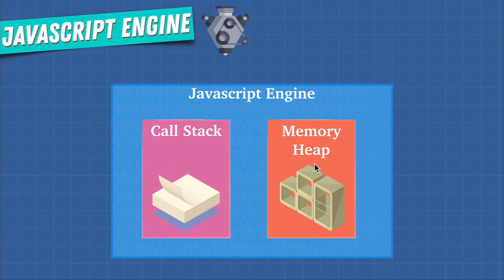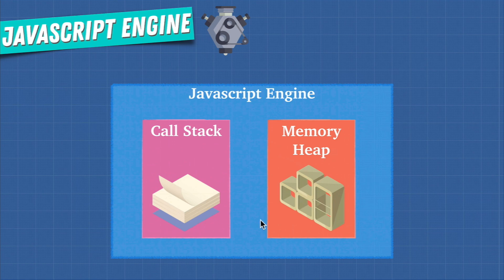We need the memory heap as a place to store and write information, because at the end of the day all programs are just read and write operations. That way we have a place to allocate memory, use memory, and release memory — just like these cupboards over here. With the call stack, we need a place to keep track of where we are in the code so that we can run it in order. The memory heap is where memory allocation happens, and the call stack is where the engine keeps track of where your code is in its execution.